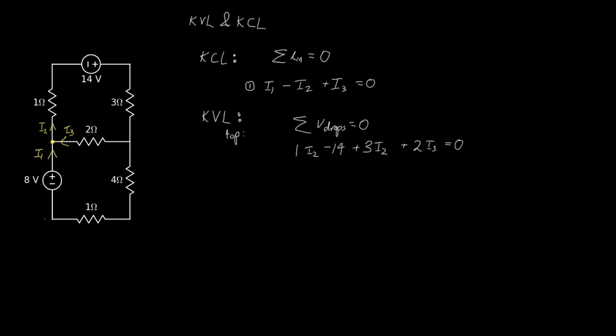Rearrange that. In standard form we'll get four I2 plus two I3 is equal to 14.